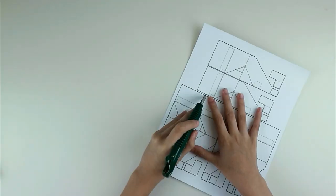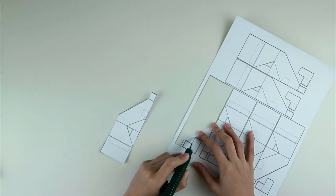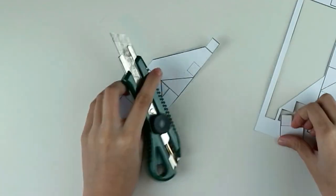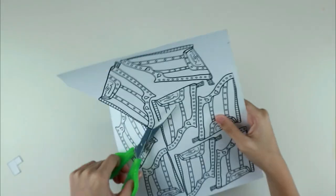First, cut out the pop-up arm using a cutter or some scissors. There are two components for the pop-up arm, the main arm and the tiny L-shaped cutout.